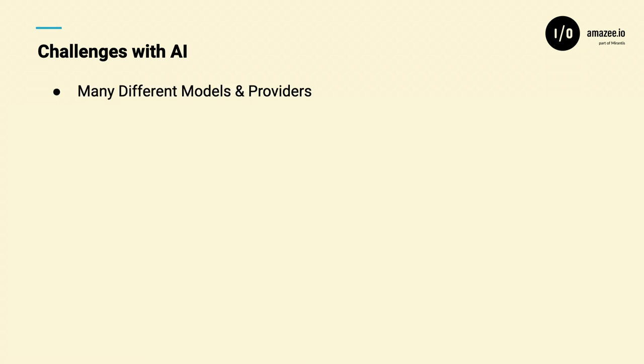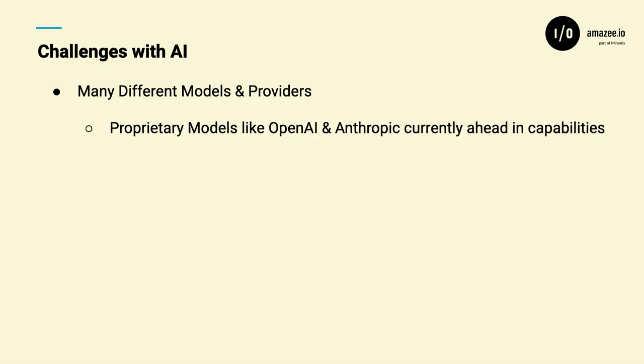There are a lot of different models and providers out there. There are proprietary models like OpenAI and Anthropic — they're definitely currently ahead in capabilities in terms of reasoning and context lengths. But what's interesting is that for what we're using it for — the Umami example — we don't need a model that knows all of human history or can read legal text. All we need is a model that can understand recipes. So we don't need a massive, very expensive model. We can use some of these open source models that, by the way, are catching up really fast. I think OpenAI realizes the open source models are coming for them — and open source models allow you to do much more because you can train them yourself.